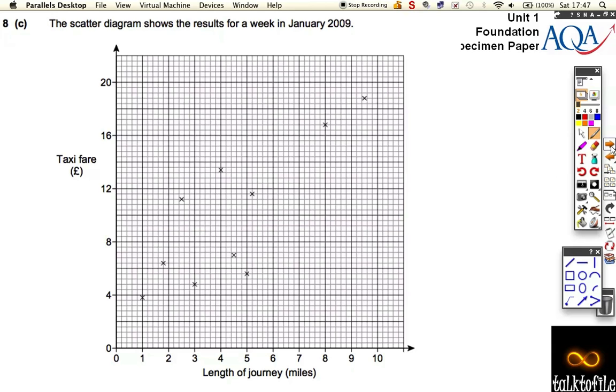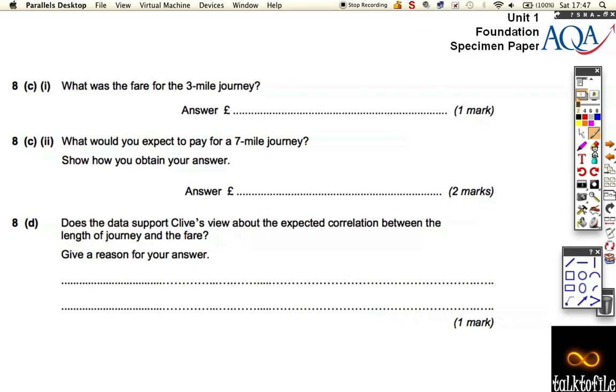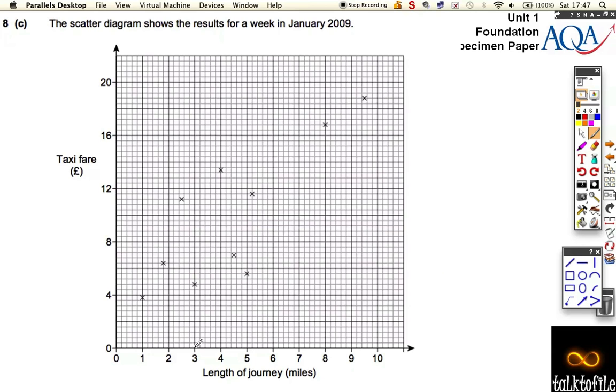And it also asks us some questions afterwards. The question says, what was the fare for the 3 mile journey? So let's go back. 3 mile journey, what was the cost? Well, it's this cross here. But we've got to be really careful, because in between 4 and 0, there's got to be 2. So every big square is worth 2. But that means every little square is not worth 1, it's not worth 10p. It's not worth 20p because that would go 20, 40, 60, 80, 100, that would be 1 pound, not 2 pounds. So it's not worth 20p or 10p, it's worth double that, it's worth 40p. Each one of these little squares is worth 40p.